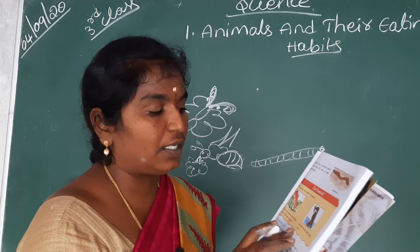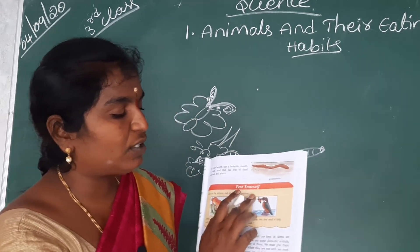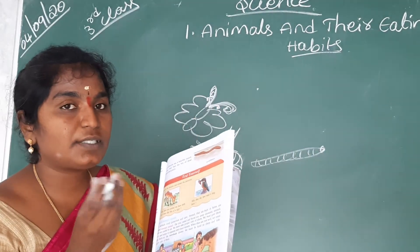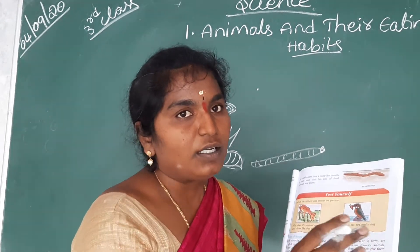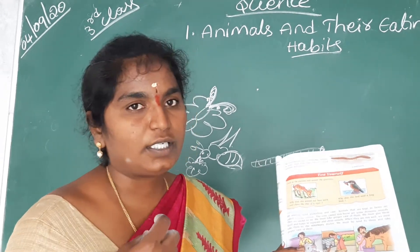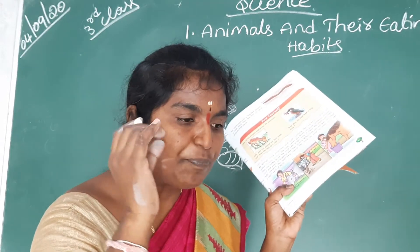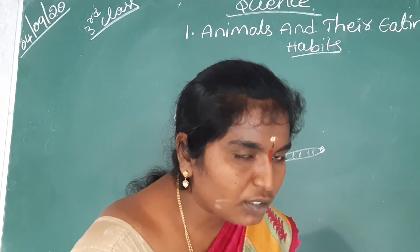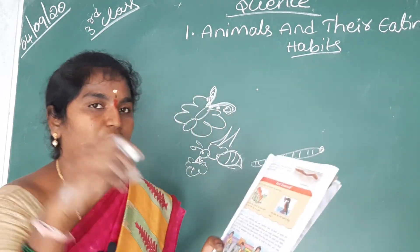Why does the bird need a long beak? Here the bird is catching fish with its beak. Why is the bird's beak long? Because it catches fish from the water. If the beak were short, the beak would not reach into the water to catch the fish.